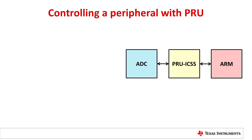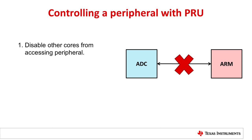Let's start by discussing the general process of controlling a peripheral with the PRU. In many cases, you only want one core interacting with the peripheral. If that is the case, make sure that you disable your other cores from accessing the peripheral. For example, in Linux, you can disable the ARM from accessing the ADC by setting the ADC as disabled in the device tree file.